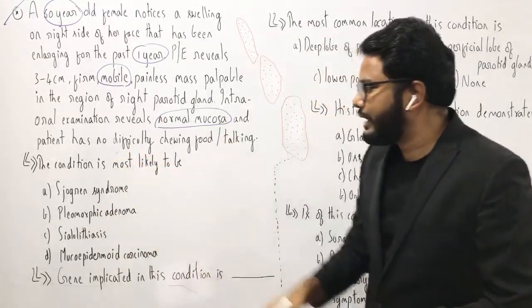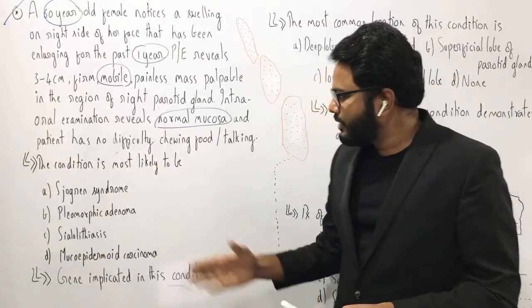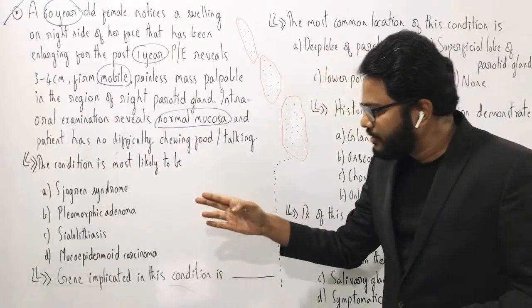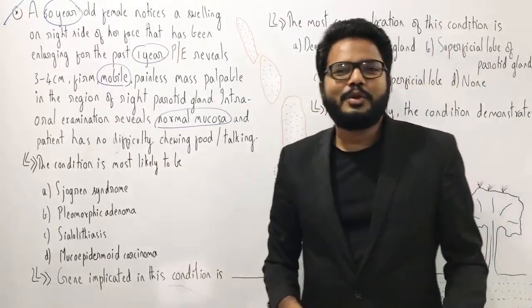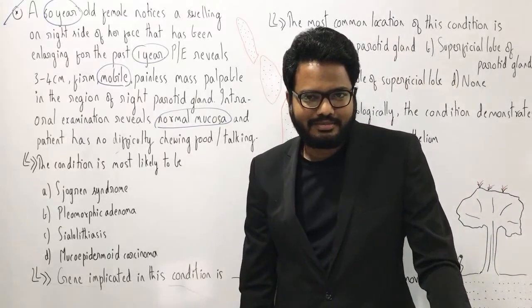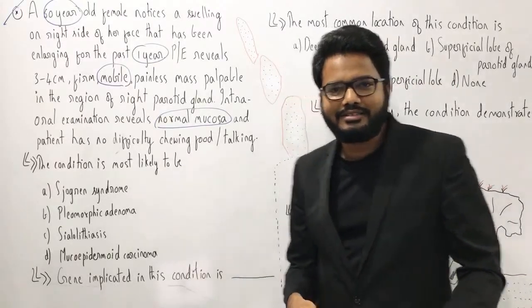So what do you think? The options are: Sjogren's syndrome, pleomorphic adenoma, sialolithiasis, or mucoepidermoid carcinoma. Which one do you think is the more appropriate answer?